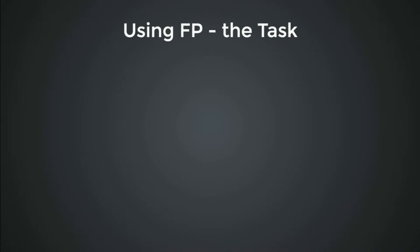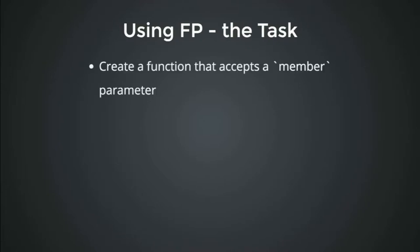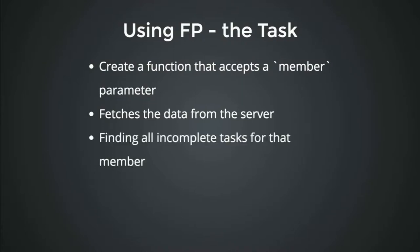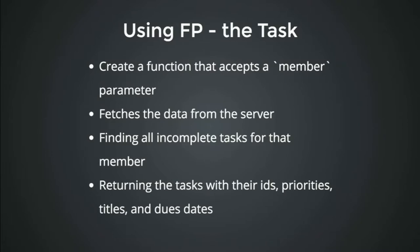I've talked a bit about functional programming — now let's actually use it. What difference does it make? We're going to take a to-do list — a task list — and create a function that takes a member, gets all the data for that person, finds all the incomplete tasks for that member, returns the tasks with their IDs, priorities, titles and due dates, and finally sorts by due date. That's the plan.